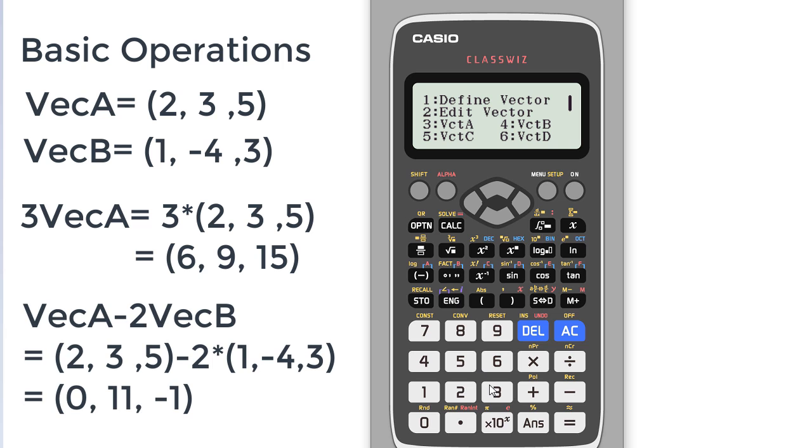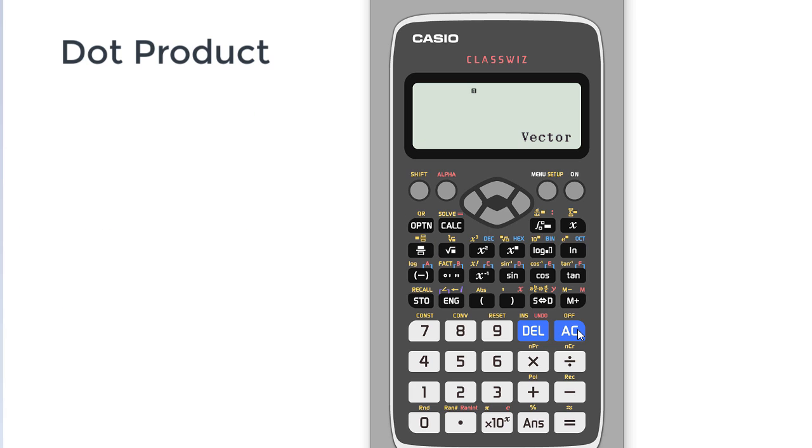Now I have to add or subtract two vectors. I can apply the operations: vector A minus 2 multiplied by vector B. You will get the result. So you can put any expression, but you have to select vector A and vector B by pressing the option button.